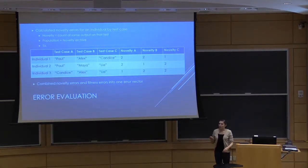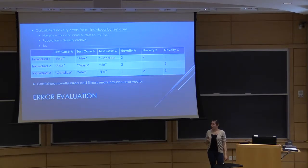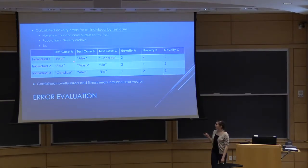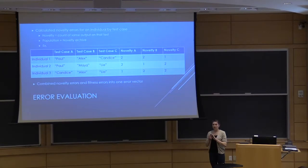So what did we actually do? We combined novelty search and lexicase, but implemented novelty search a little differently. We decided not to do the distance calculation — partially because it was hard and slow — and instead used equivalence calculations. Rather than finding the distance, we calculated the number of times an output shows up. We completely ignored fitness in the novelty component — fitness is not taken into account at all.